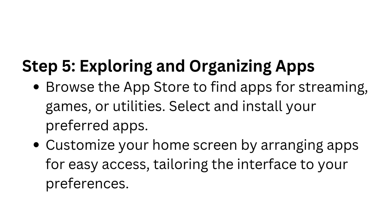Step 5: Exploring and organizing apps. Browse the App Store to find apps for streaming, games, or utilities. Select and install your preferred apps. Customize your home screen by arranging apps for easy access, tailoring the interface to your preferences.